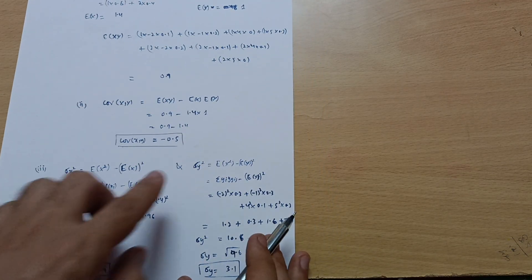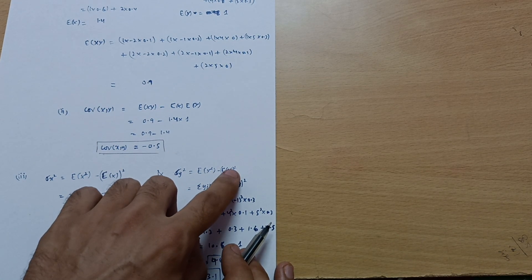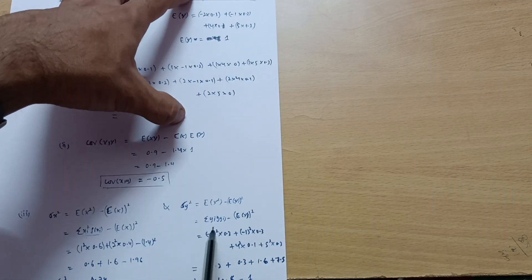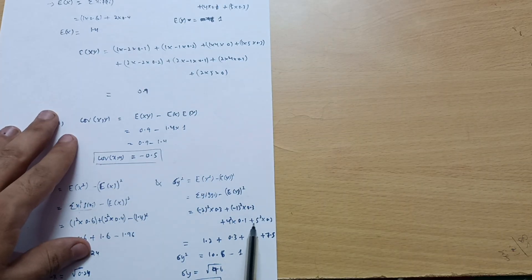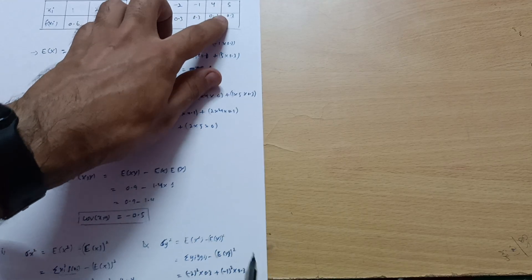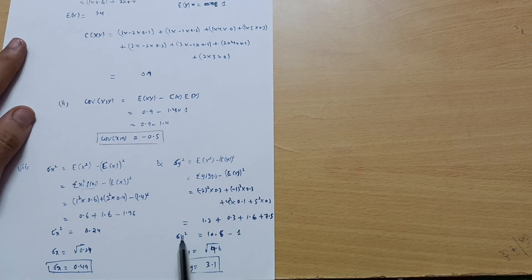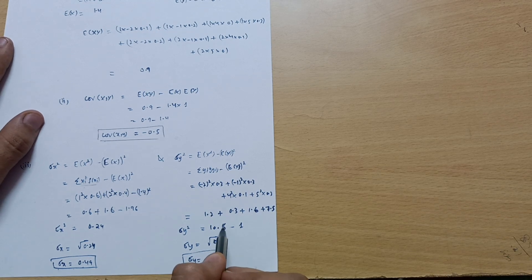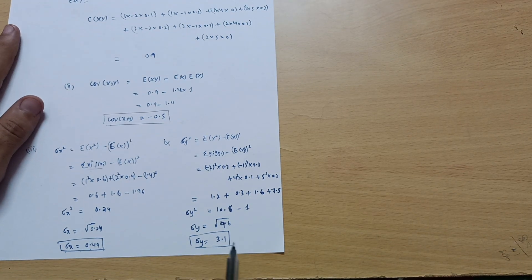Similarly, σ_y² equals E[Y²] minus (E[Y])². For E[Y²]: (minus 2)² times 0.3, plus (minus 1)² times 0.3, plus 4² times 0.1, plus 5² times 0.3, minus 1² (since E[Y] equals 1). This gives σ_y² equal to 10.6 minus 1, so σ_y equals the square root of 9.6, which is approximately 3.1.